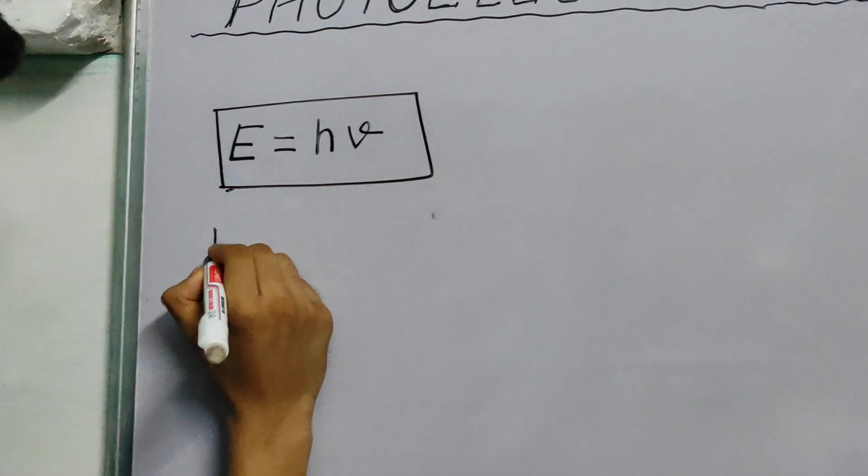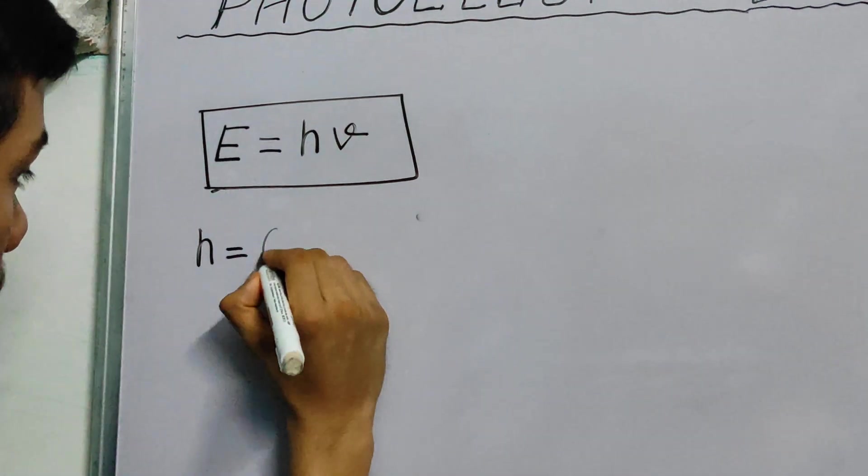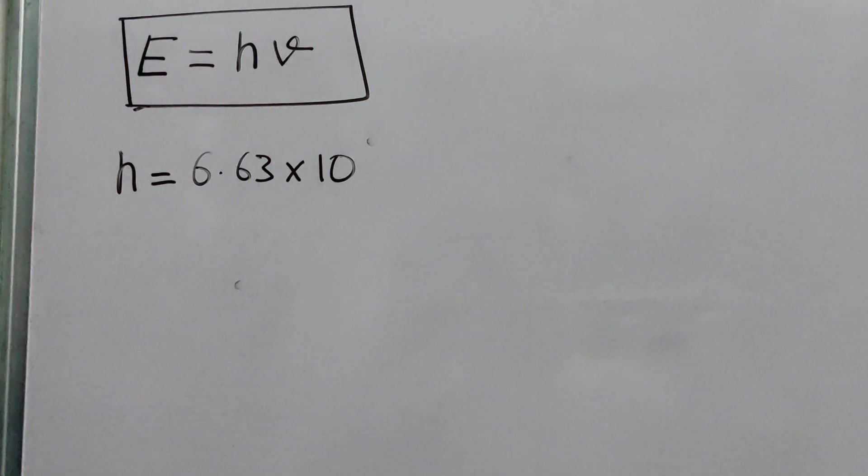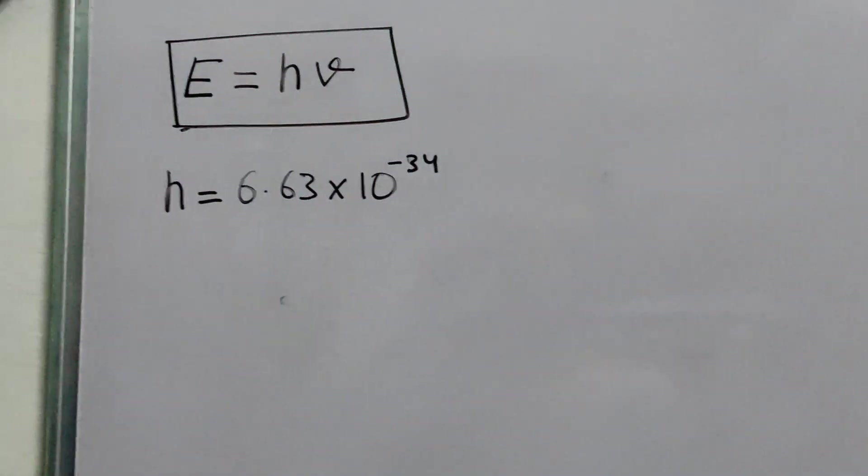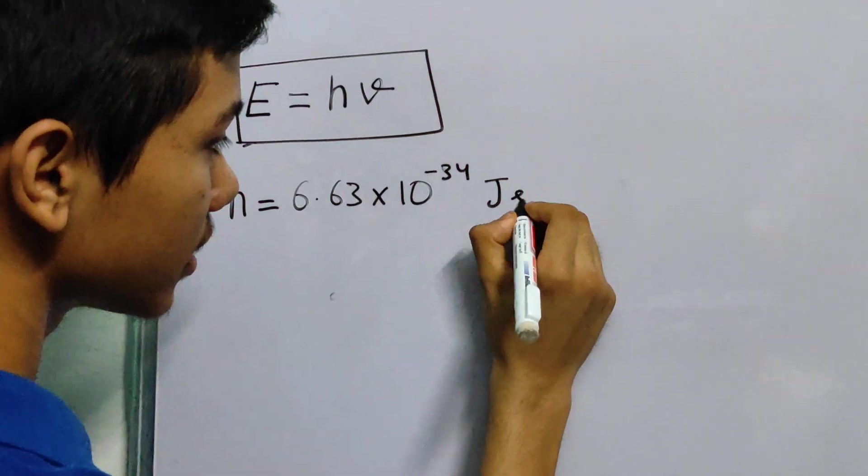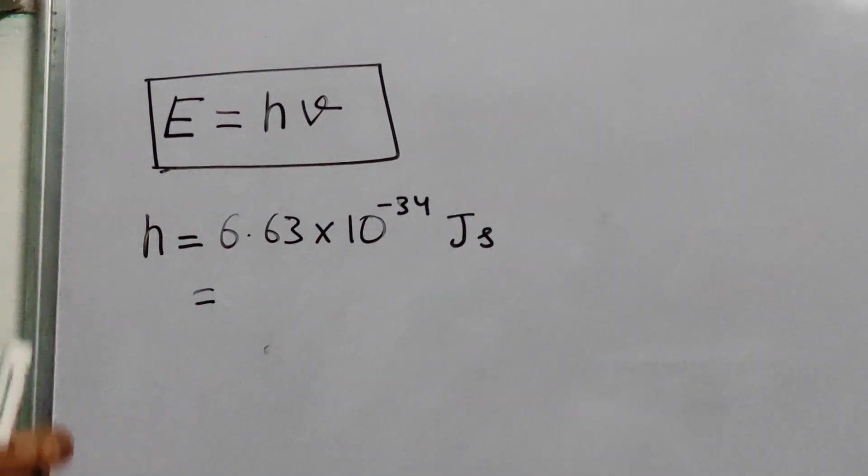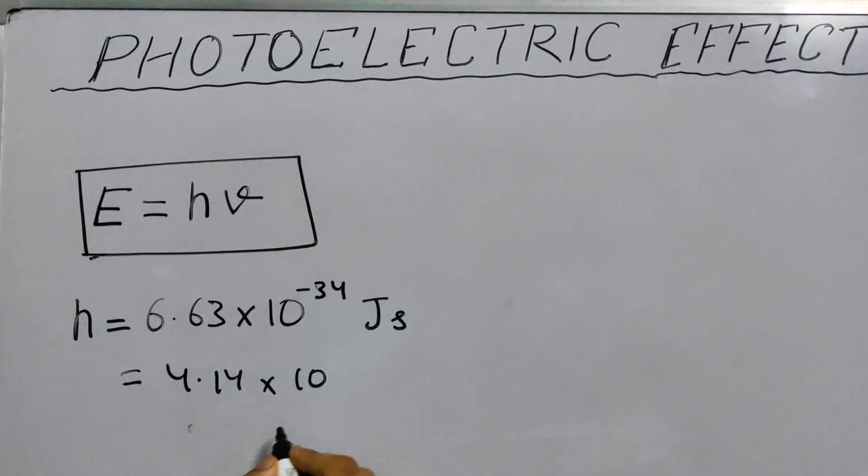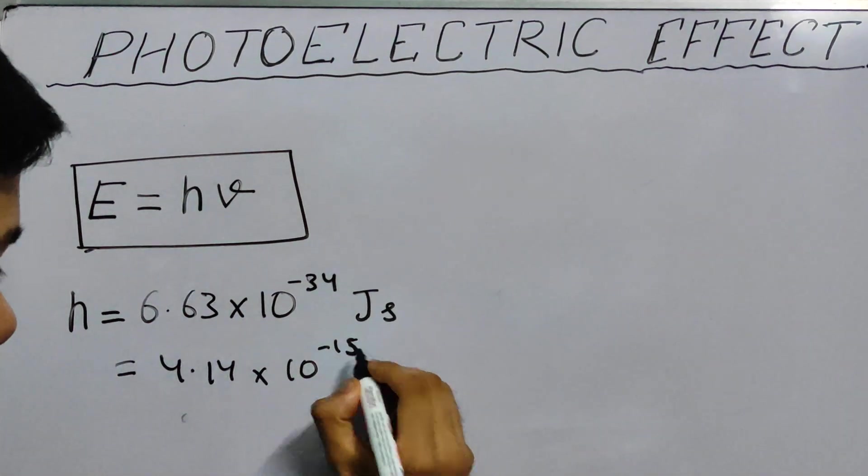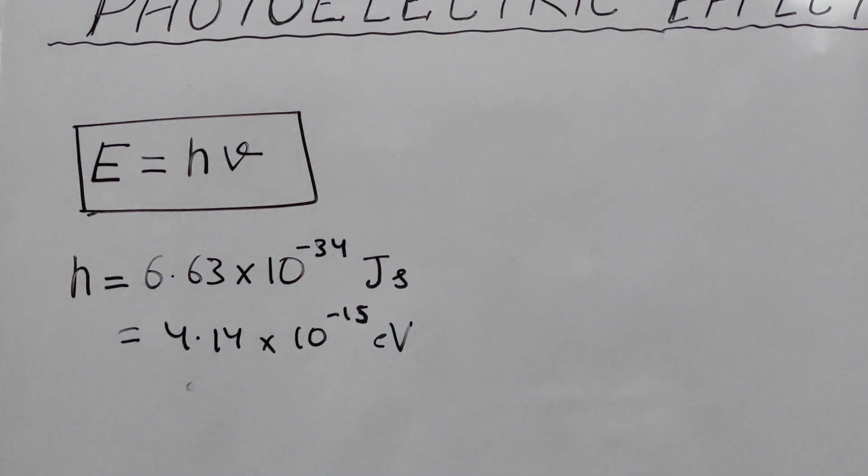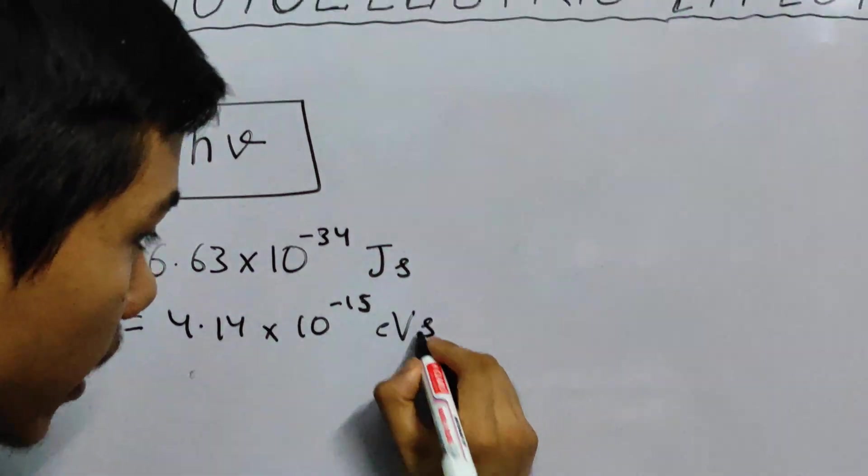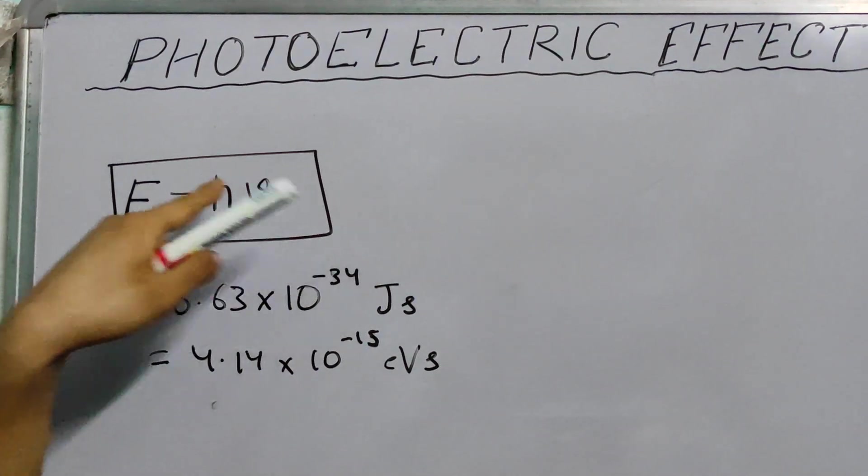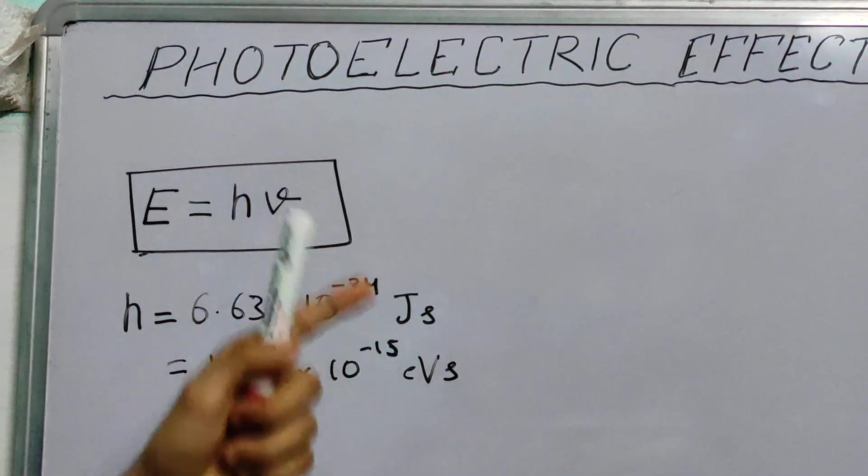The value of H, known as Planck constant, is somewhat 6.63 into 10 to the power minus 34, really small number, joule seconds. Useful way to put it is 4.14 into 10 to the power minus 15 electron volt seconds. And nu is the frequency, E is equal to H nu.